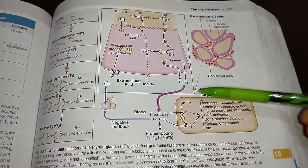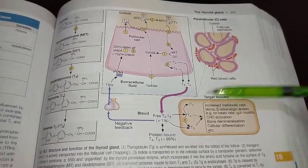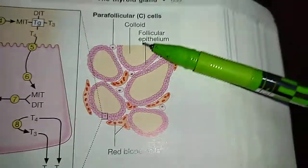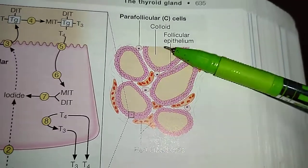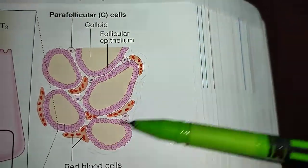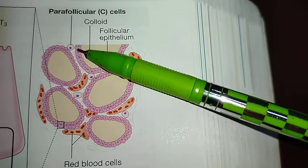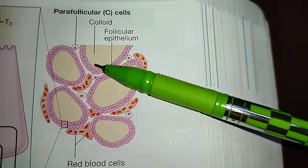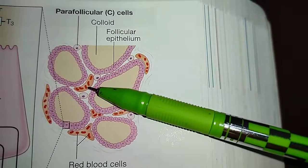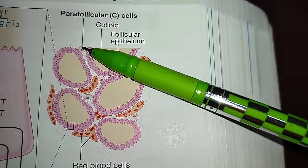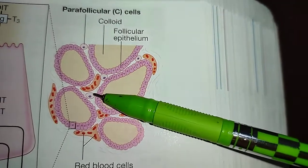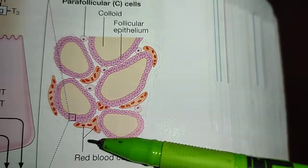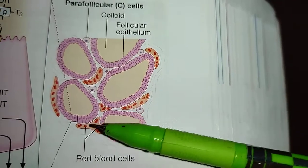Let me discuss the synthesis of thyroid hormone. Here is the thyroid gland — this is the structure of the thyroid gland with the follicular epithelium outside and the colloid inside. These are the red blood cells and these are the parafollicular C cells. This is the basic structure.